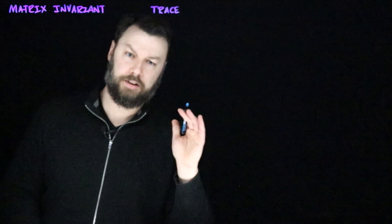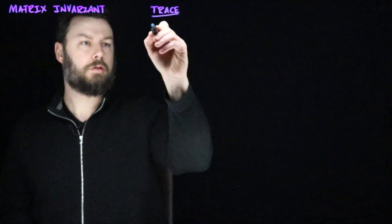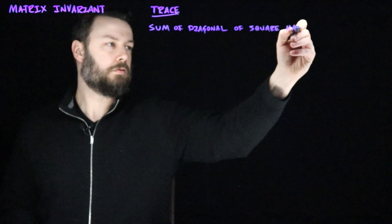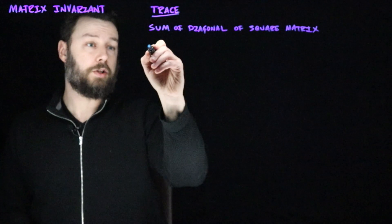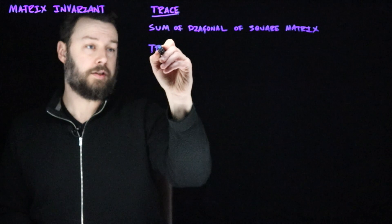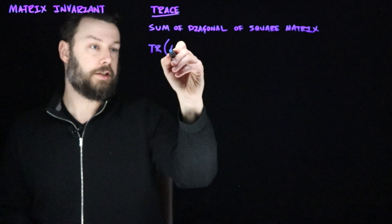Fundamentally, the trace is just the sum of the diagonal elements of a square matrix. When we talk about the trace of a matrix A, we often write this as TR of the matrix A.